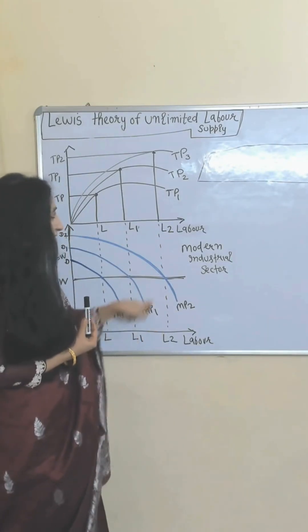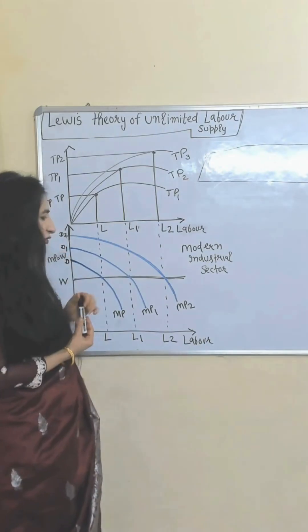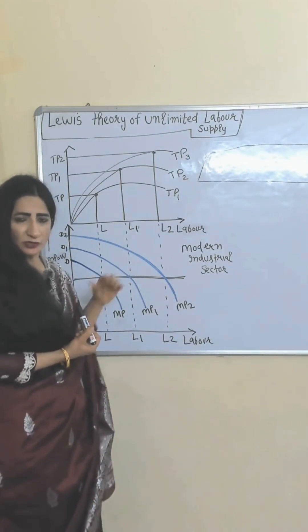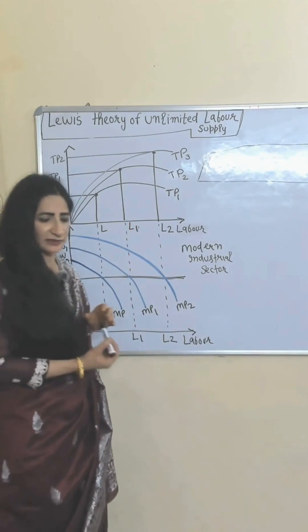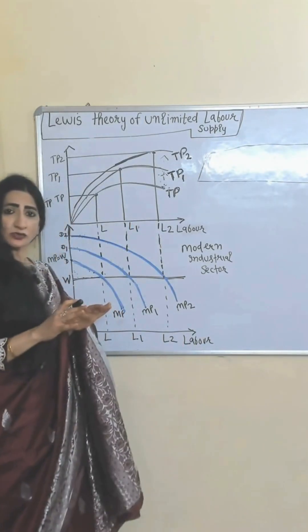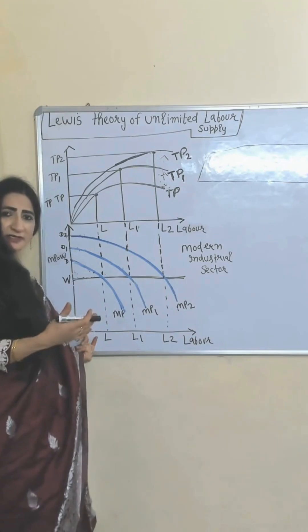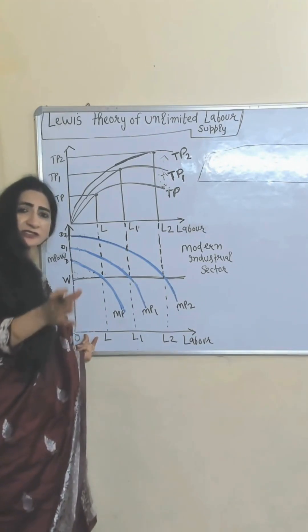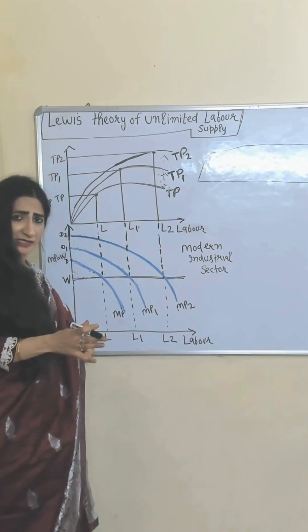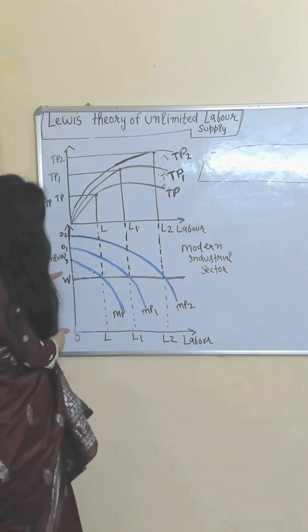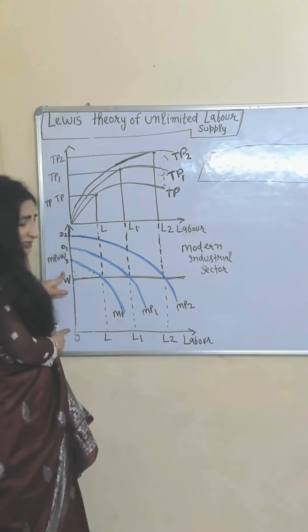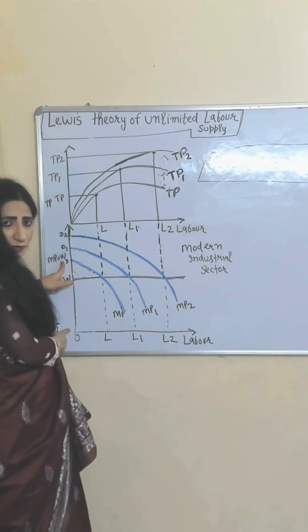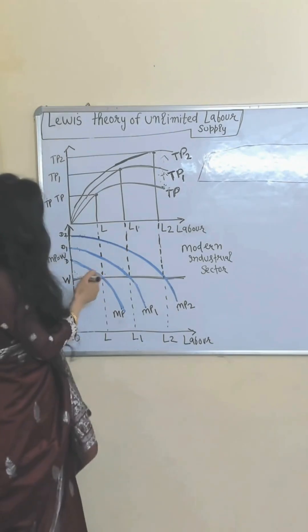These three MP curves show the marginal product of labor. These three TP curves show the total product of the modern industrial sector. Now suppose all labor is transferred from agriculture to the modern industrial sector. They are paying OW wages, but the marginal product of labor is equal to OD.